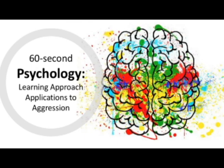Social learning theory is the idea that aggression can be learned through observation and imitation. Therefore, if someone observes a model behaving aggressively, they may learn the behaviour by copying them. For example, if a child observes a parent behaving aggressively, they are likely to copy them, particularly as imitation is more likely when the observer admires or identifies with a model.